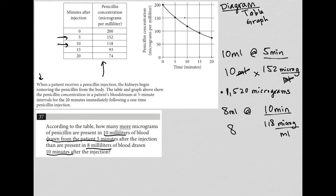So again, doing the same exact setup, how many micrograms then would I expect if there were 8 milliliters of blood withdrawn? So I'm going to multiply this, the milliliters cross out. I'm going to go to my calculator and figure out what is 8 times 118, and that gives me 944 micrograms.